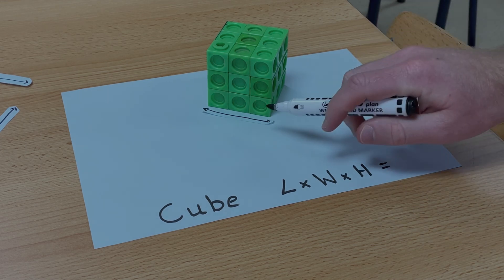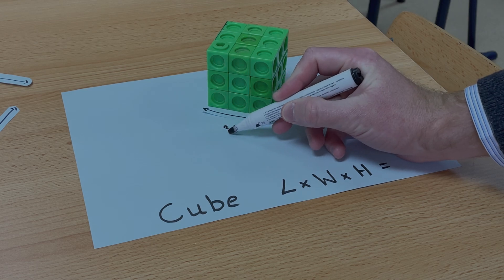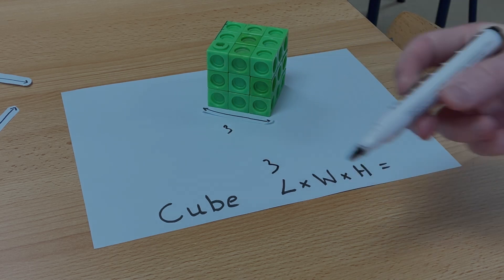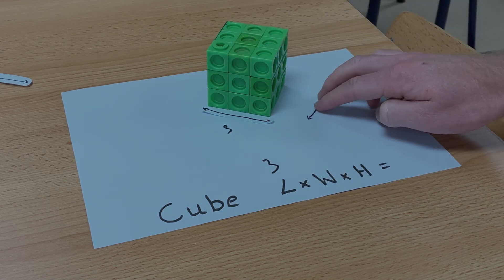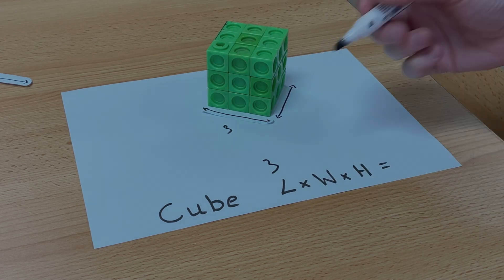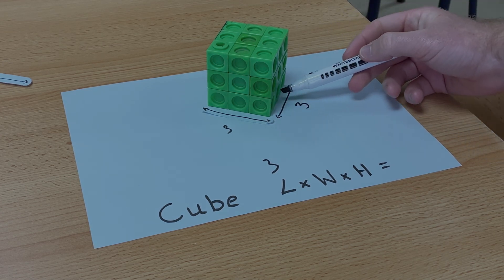So the length in this cube is 1, 2, 3. The width, because it's a cube, is exactly the same as the length. And the length here is 3 again. 1, 2, 3.